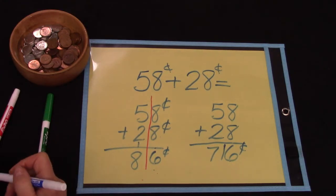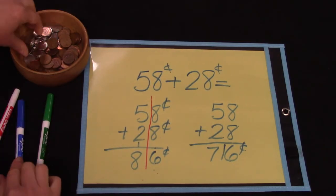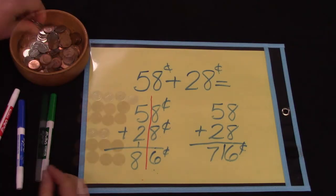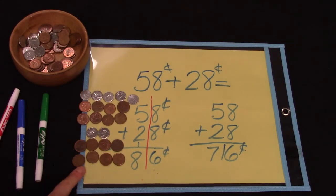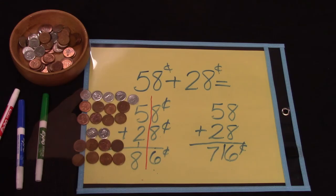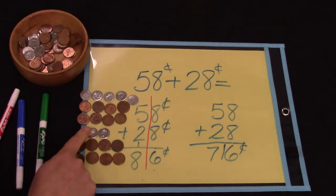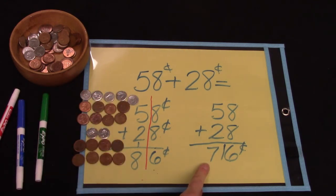Oh well let's test it. Here we have 58 cents plus 28. Well if we were just to count our pennies and our dimes we would see that we have 1, 2, 3, 4, 5, 6, 7 dimes and 8 plus 8, 16 pennies. But that's really not how we figure it out is it.